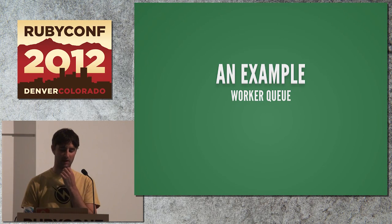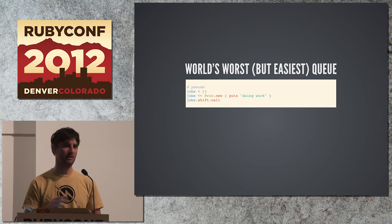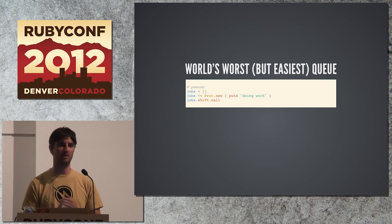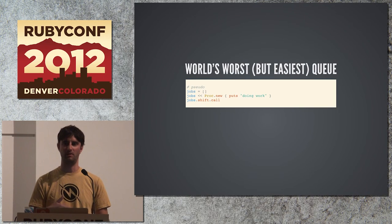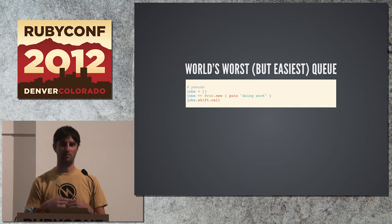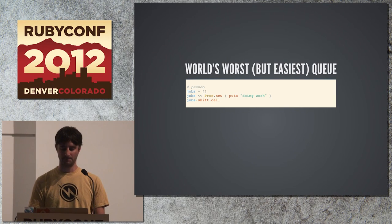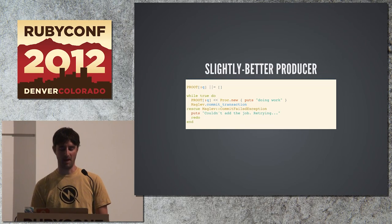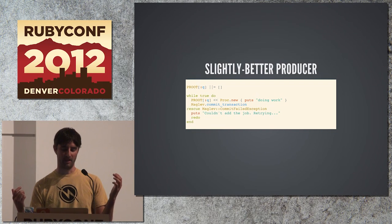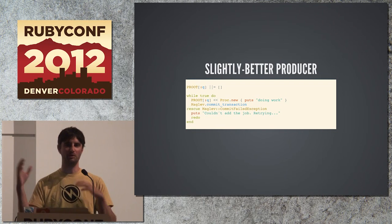Another example is something simple like a worker queue. We have Sidekiq and Resque, and those are great libraries, but you can write something very similar in about 35 lines of code. If you think about what these worker queues do — you want to put something like a proc in, be able to run a call method, and the work gets done. In Maglev, you can just keep on adding jobs, commit, and they'll be available to be pulled off an array. The interesting thing here is that I'm persisting a proc.